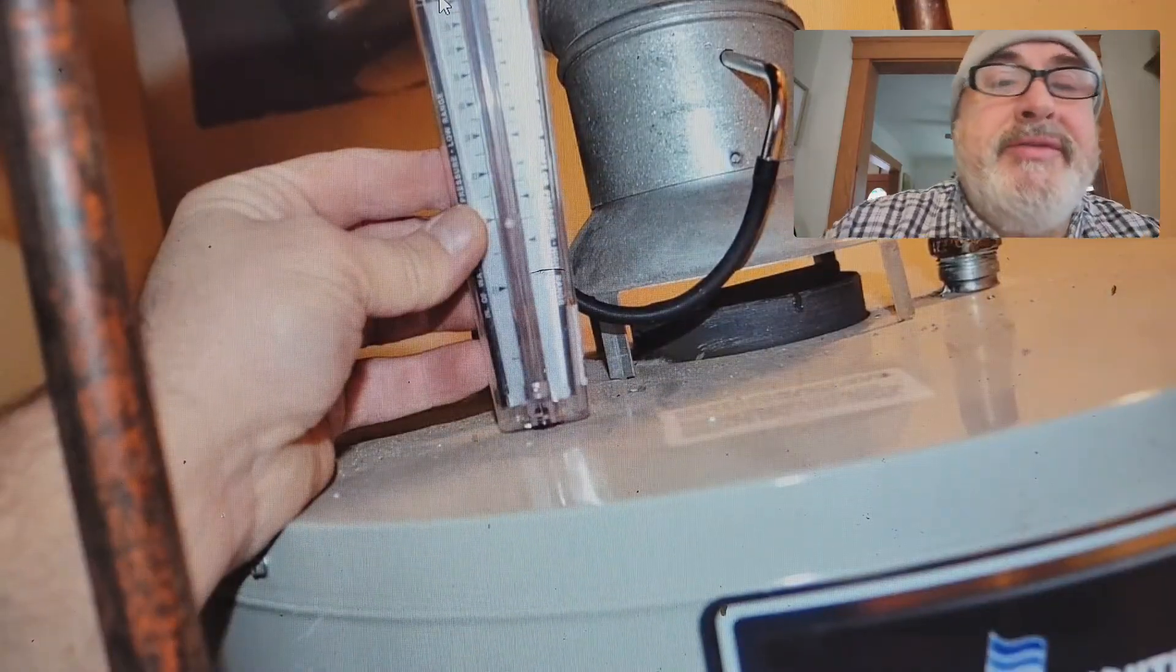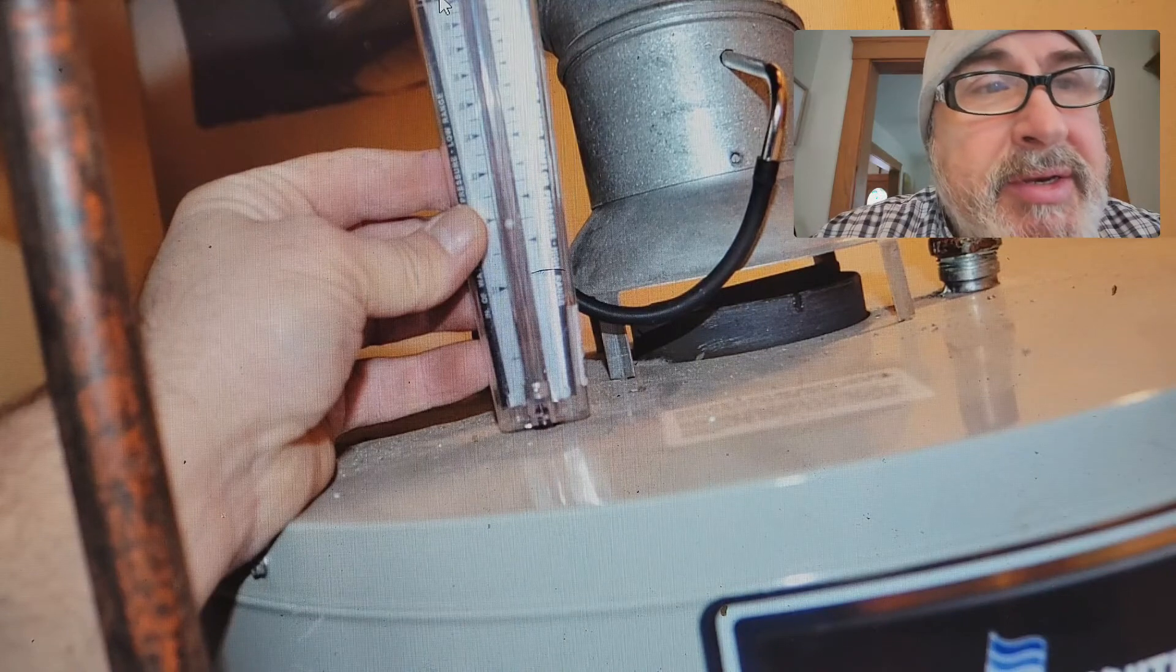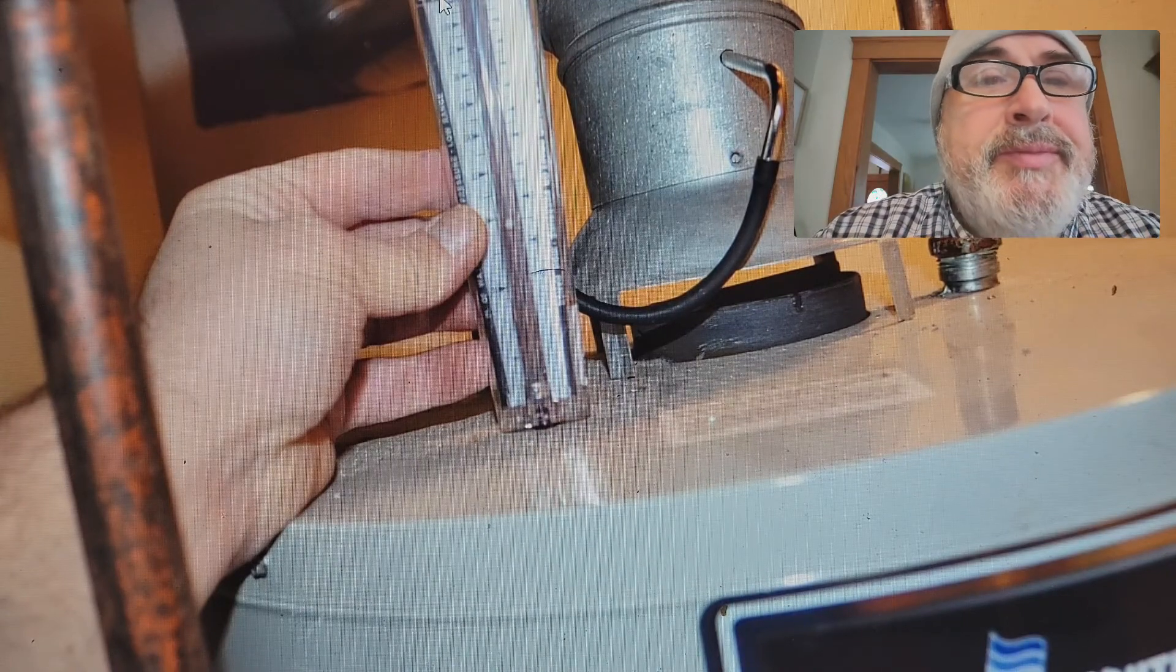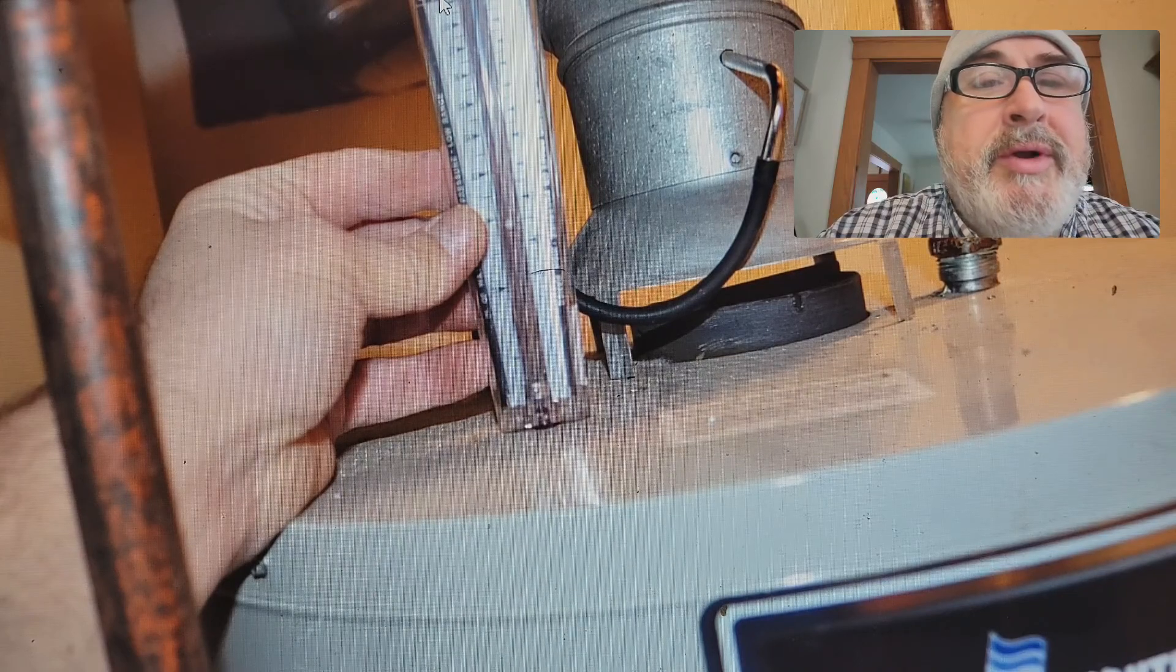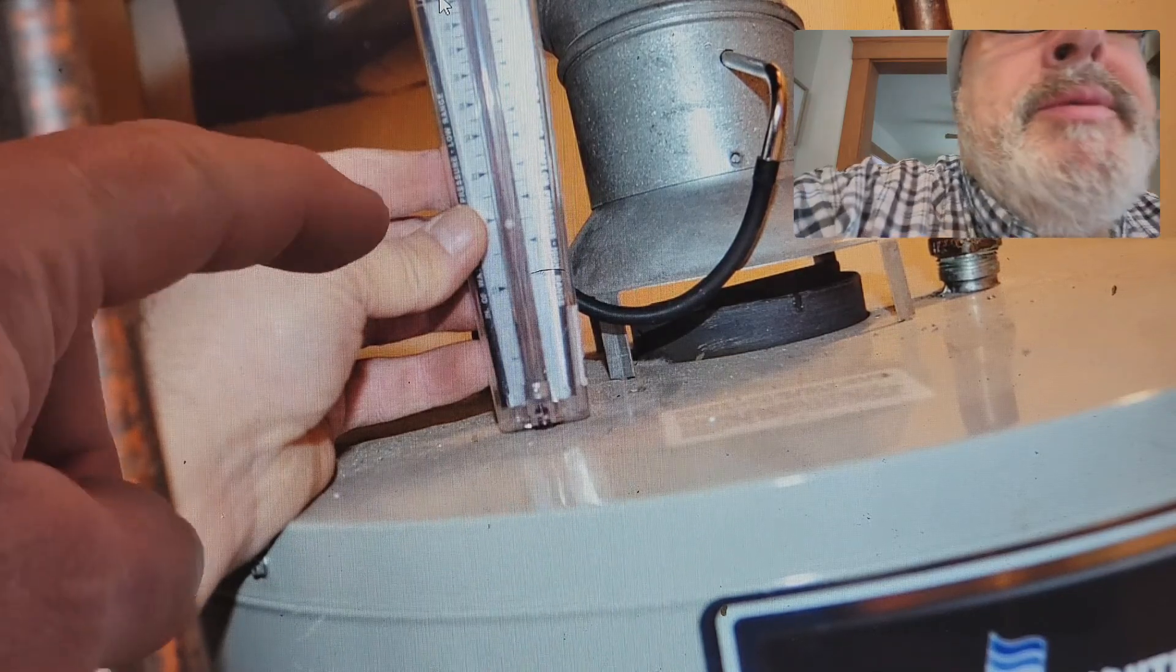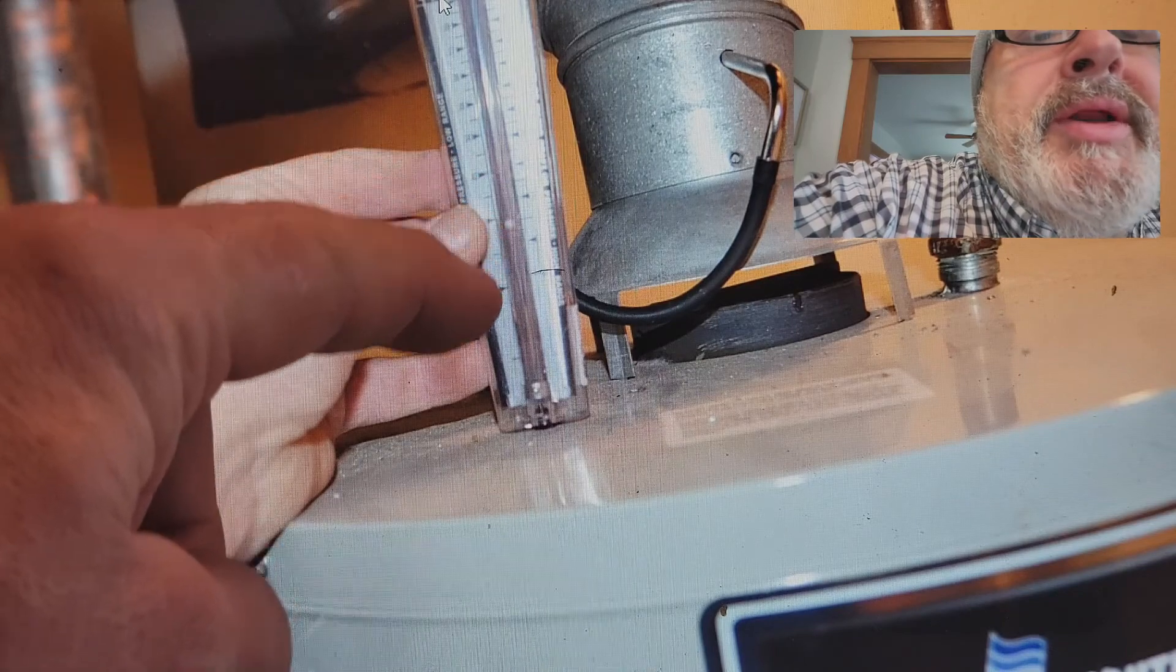So here's a draft test. So here's why you need to know your draft. So basically you drill a hole in the flue. And this is called the Dwyer's draft gauge. And you can see the little ball is right there. And that's where you want it between these two.